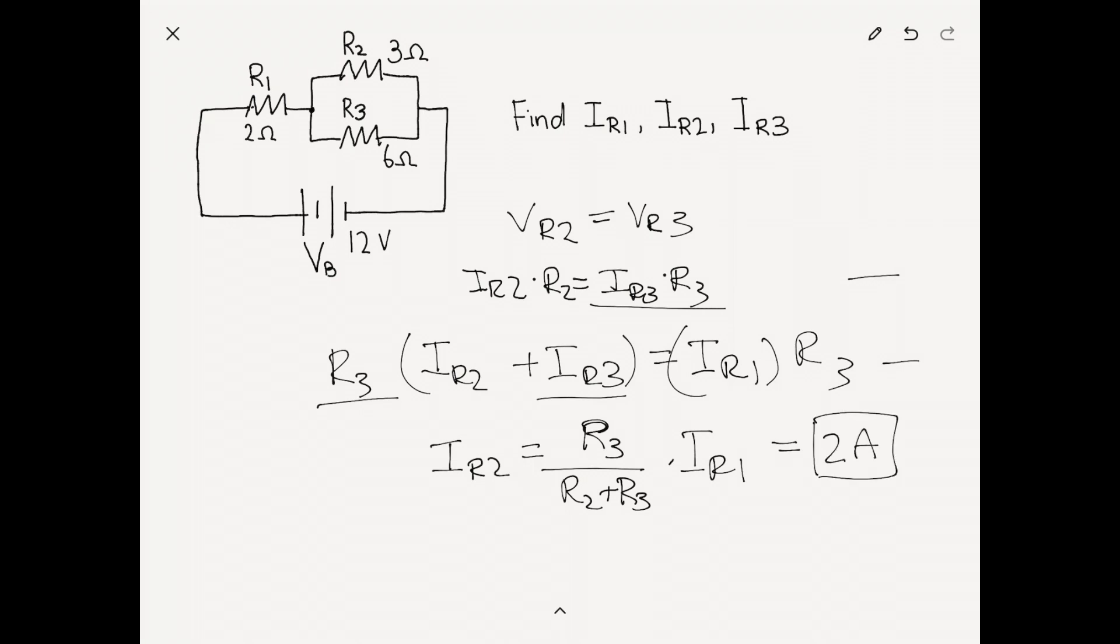And by the same token, we have the current at R3 equal to R2 over R2 plus R3 times the current at R1. And when we substitute the values in, again, we get 1 amp.